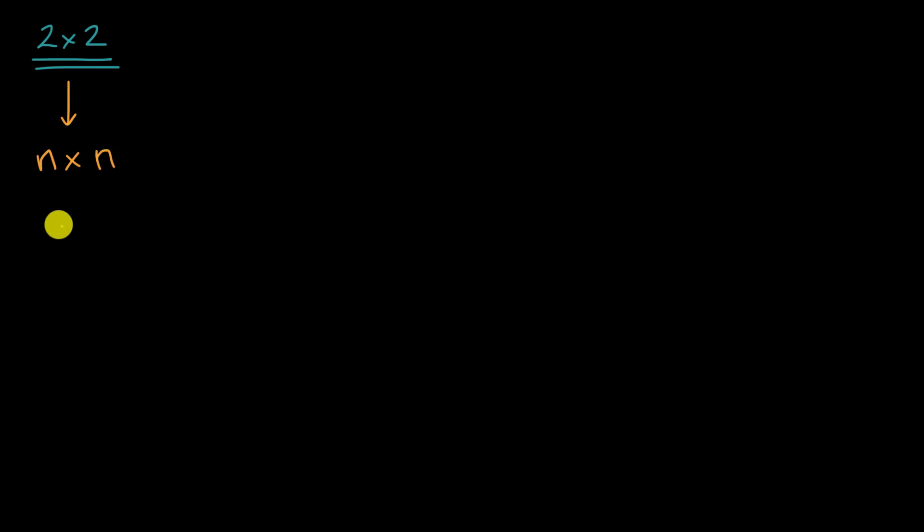We've already thought a lot about two-by-two transformation matrices as being able to map any point in the coordinate plane to any other point, or any two-dimensional vector to any other two-dimensional vector. What we're going to do in this video is generalize a bit and realize that the same principles can be used for n-dimensional spaces. It's really the same ideas, so let's extend what we know about two dimensions to, say, four dimensions.